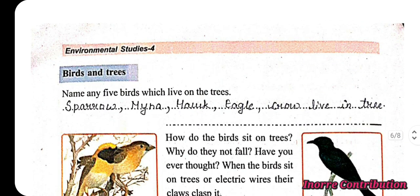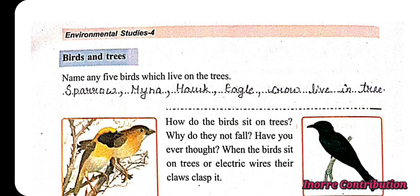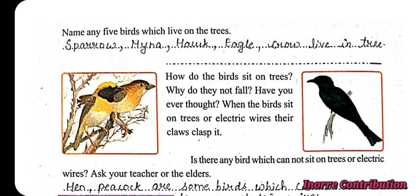Birds and trees: name any five birds which live on trees. Sparrow, myna, hawk, eagle, and crow live in trees. How do birds sit on trees without falling? When birds sit on a tree or electric wire, their claws clasp it. Discuss this in the classroom.